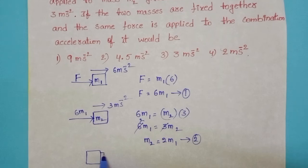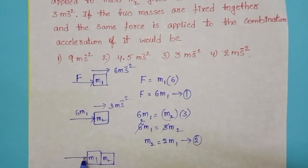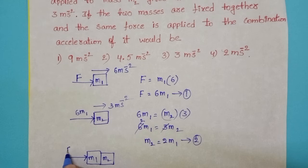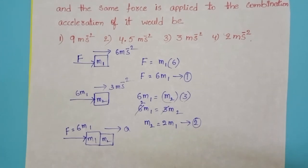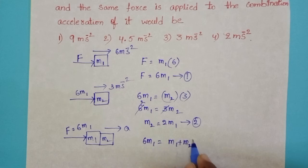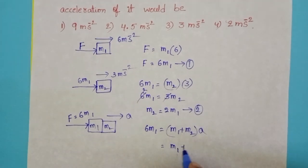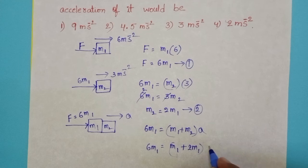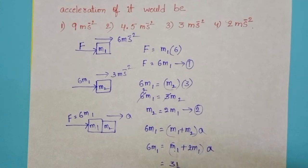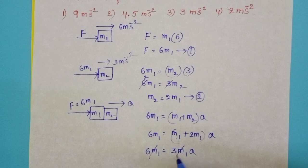Now these two masses M1 and M2 are put together, and the same magnitude of force is applied on the combined system. F equals 6M1. We need to find the acceleration. So F equals (M1 plus M2) times acceleration. Substituting M2 equals 2M1, we get M1 plus 2M1 equals 3M1 times A, and on the left-hand side we have 6M1. On both sides, mass cancels out.